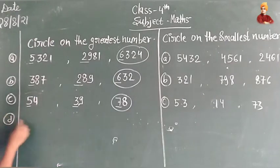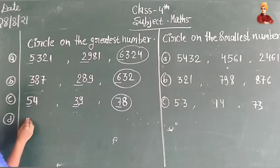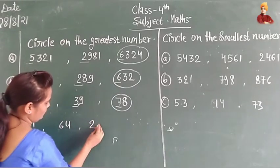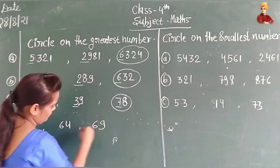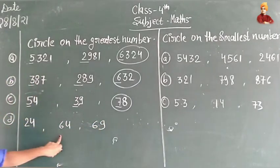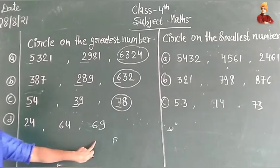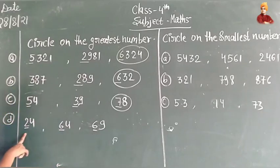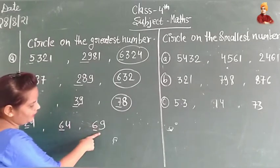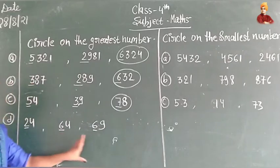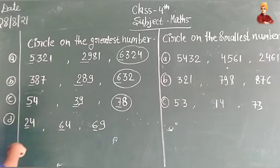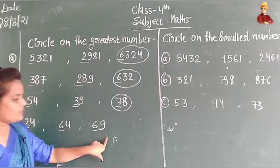Now if you are given numbers and asked which is the greatest number, we look at the first digits. Here we have 2, 6, and 6. Since 2 is small, we can eliminate that number. So the greatest number is between the two numbers starting with 6 — that is, 64 and 69.